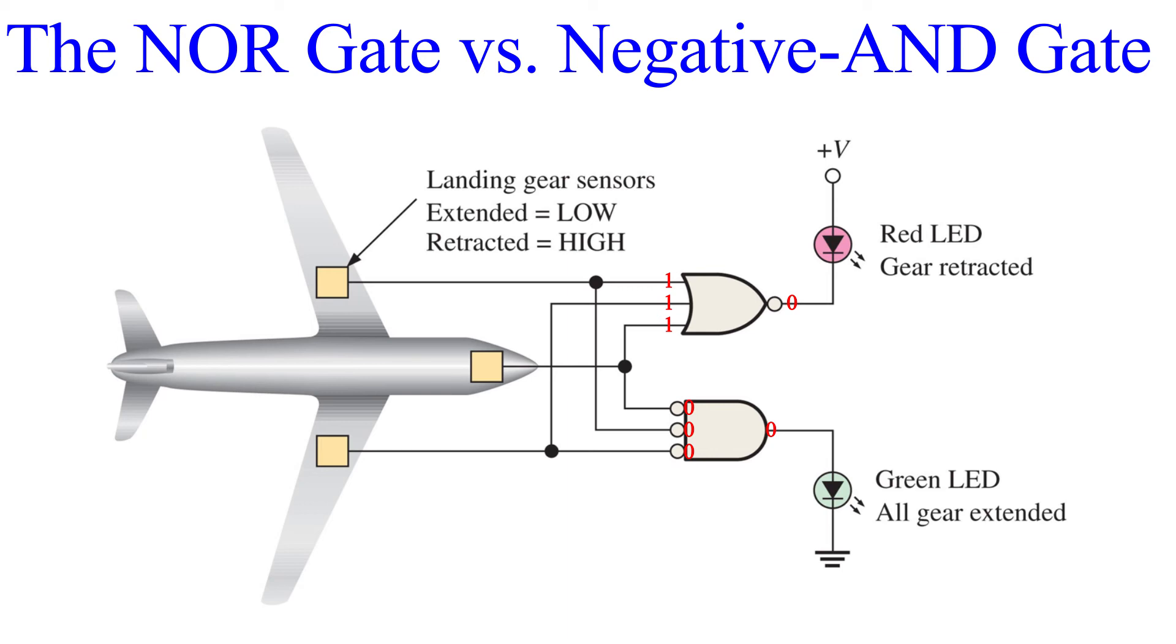Now when the landing gear is extended, the sensors output a low signal. The NOR gate will output a high, which is the non-active state of the output, shutting the red LED off. The low signals that go to the negative AND gate get inverted to high and then ANDed. All landing gear must be extended for the output to be high, switching on the green LED.